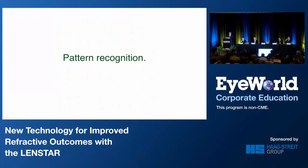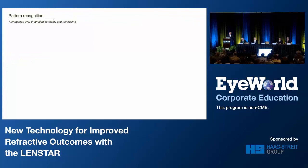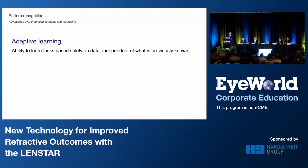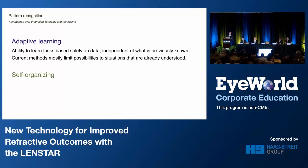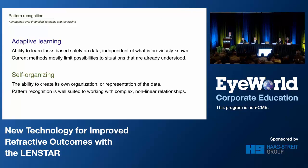I'm going to explain a little bit about how pattern recognition works and what's the advantage of doing something like this over formulas. Pattern recognition has the ability to learn tasks independent of what was previously known. Current formulas limit situations to what's already understood. This approach is self-organizing — it can create its own representation of the data, and it's very well suited to the Chinese puzzle which is the human eye. For any given axial length, there are almost exponential combinations of ACD, lens thickness, central corneal power, and white-to-white. We need something that can handle all these nonlinear relationships.